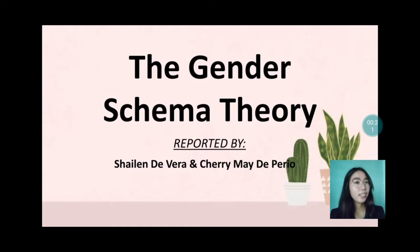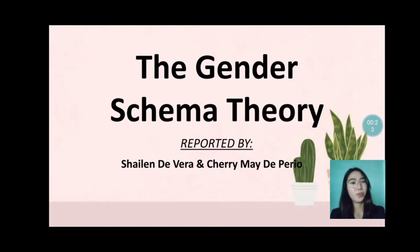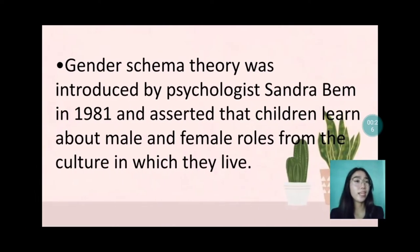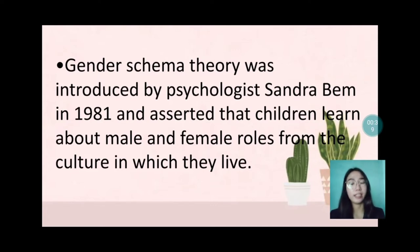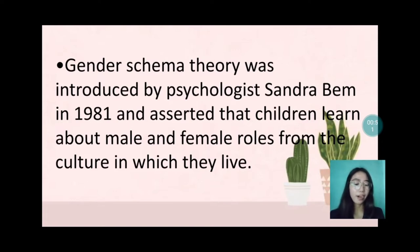So let's start — what is the Gender Schema Theory? Gender Schema Theory was introduced by psychologist Sandra Bem in 1981 and asserted that children learn about male and female rules from the culture in which they live. According to the theory, children adjust their behavior to align with the gender norms of their culture from the earliest stages of social development.